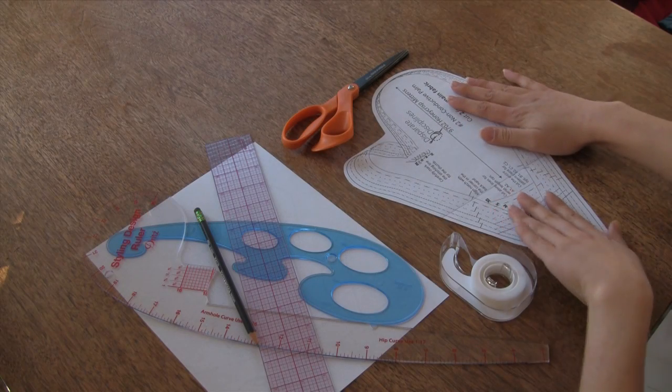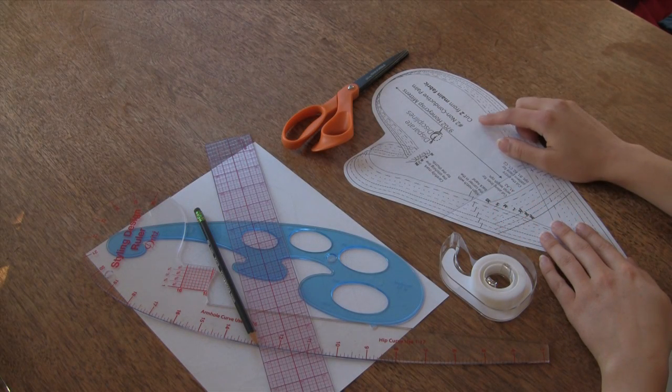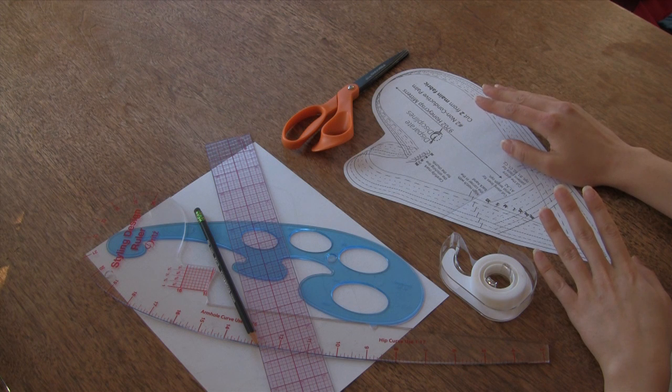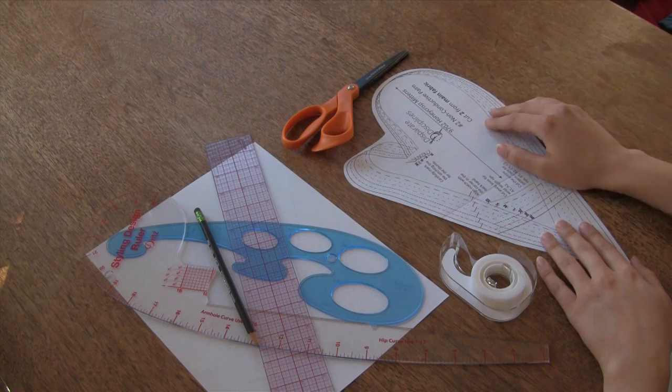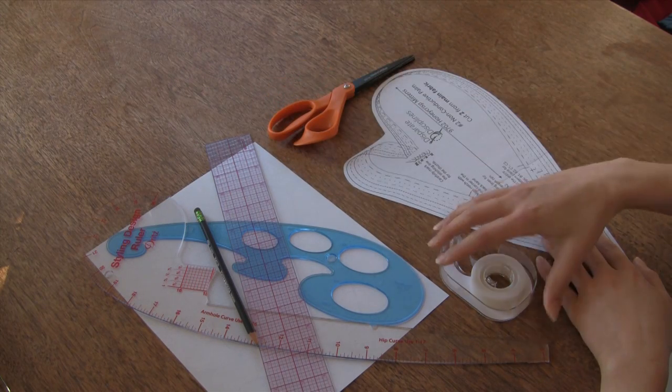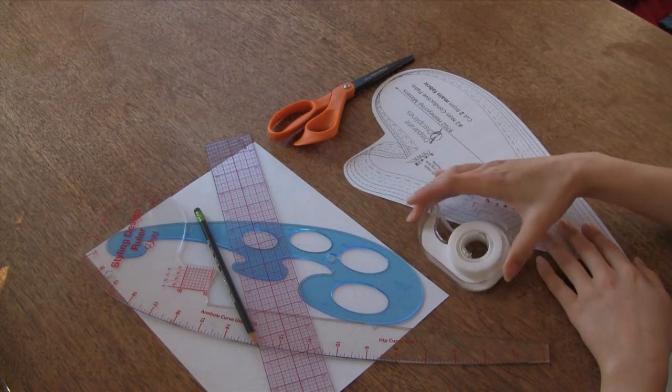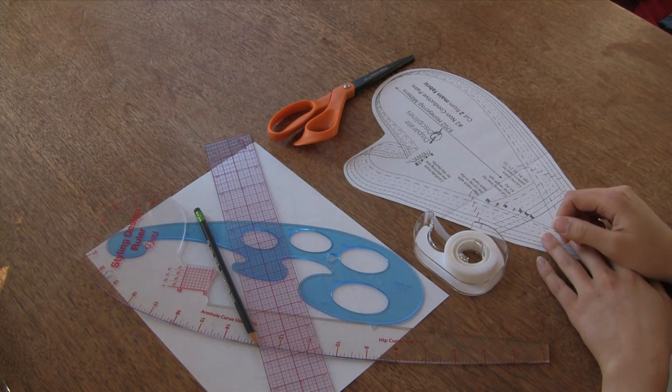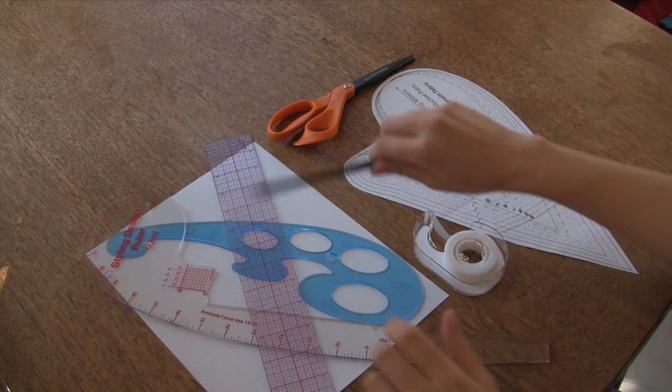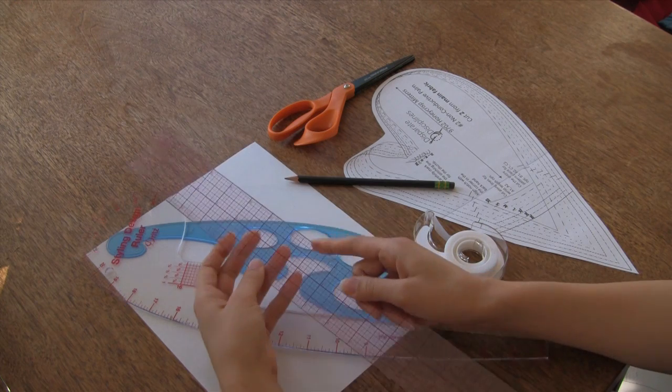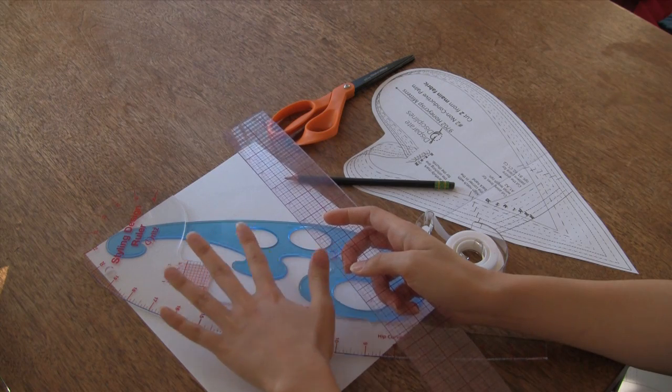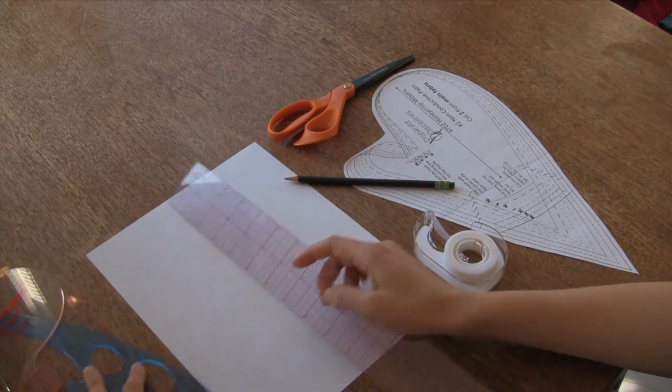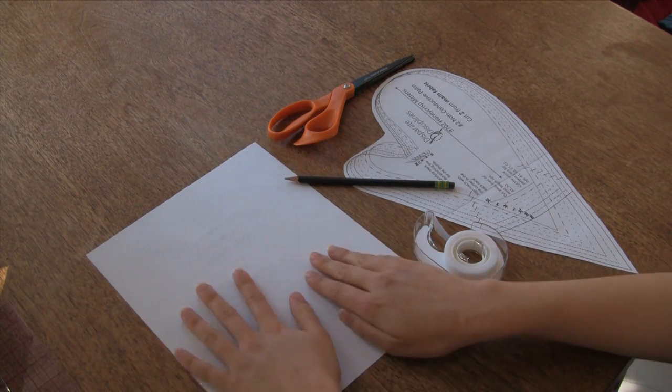Now before we begin, you're gonna need some supplies. Obviously your pattern pieces. Here I'm just showing the palm pattern piece, but you'll also need to make changes to the cuff and the back of hand and quite possibly the finger and thumb tips. Next, scissors, tape. I like some good invisible or matte tape as it's easier to write on than glossy tape. A nice sharp pencil, rulers of course, clear ruler is especially helpful, and optional but useful are French curves or hip curve. And then you're also going to want a scrap piece of paper.